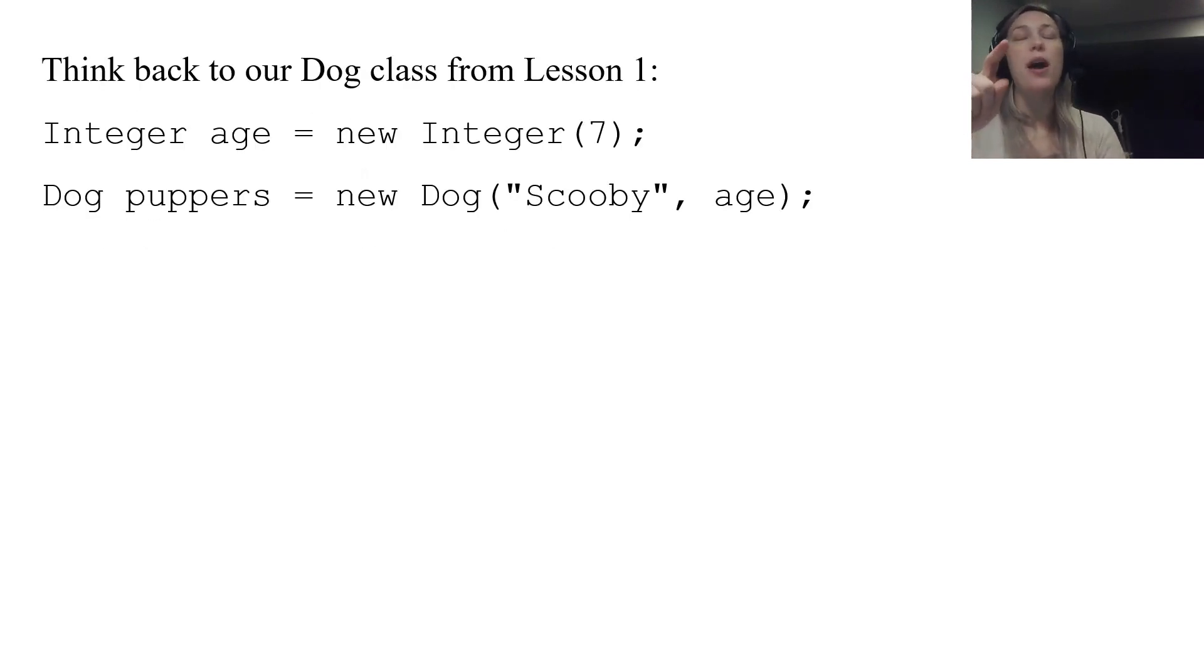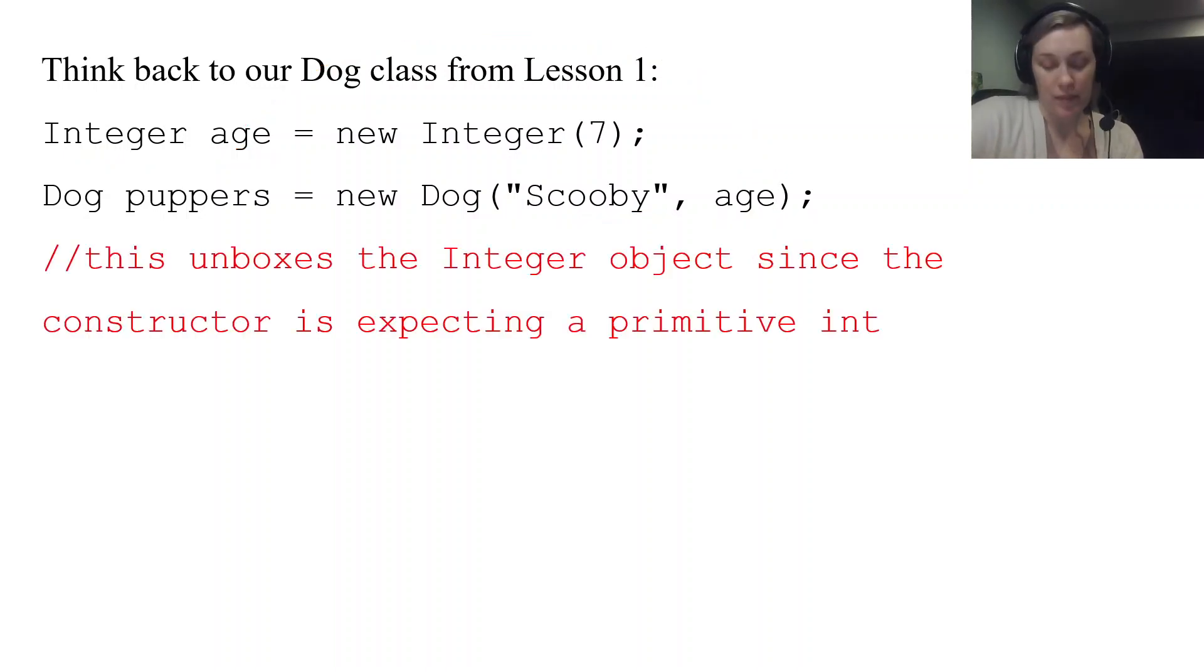And then the other example of being passed as a parameter. So think back to our dog class. Let's say I have an Integer age, an age object that's seven, and my dog from lesson one, dog puppers equals new dog, it accepted a string and an integer. A string and an int is what that constructor accepted. But I take this Integer and I pass it there. But my constructor is expecting an int. If my constructor is expecting an int and I pass an Integer, Java will unbox it. So again it'll take that object, it'll unbox that seven and it'll put it in place of that constructor, that seven, so that you're actually passing a primitive type. So it unboxes that Integer object since the constructor is expecting that primitive int. So that goes back to an example from lesson one that we've done.